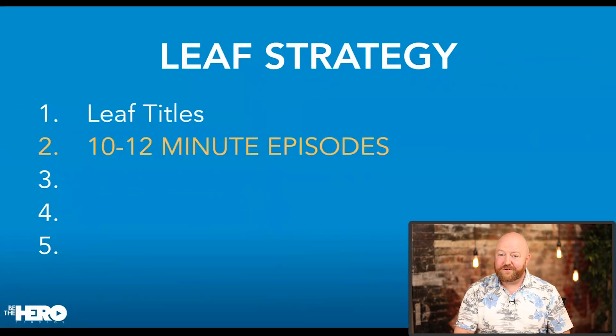Ingredient number 2 is to have each of your episodes be 10 to 12 minutes in length on average. Some episodes can be shorter — say 7 or 8 minutes — and some longer, like 14 or 15 minutes; that's totally fine. Just don't focus on YouTube Shorts if you want to get results with this strategy.